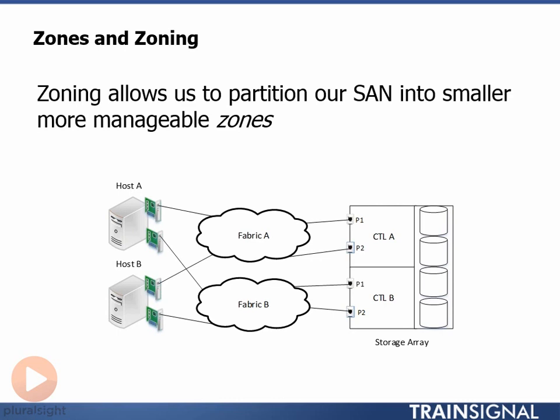Now let's enable zoning and place a simple zoning configuration on each fabric. As we can see in the diagram, we've got a single zone in place on each of our fabrics — a yellow zone in Fabric A and a yellow zone in Fabric B. On each fabric, the yellow zone allows Host A to see, communicate with, and log in to our storage array. The zoning in Fabric A allows the top HBA in Host A to see port P1 on Controller A, whereas the yellow zone in Fabric B allows the bottom HBA to communicate with port P1 in Controller B. Importantly, Host A cannot communicate with Host B or port P2 on the storage array on either fabric, because there are no zones configured to allow that particular access.